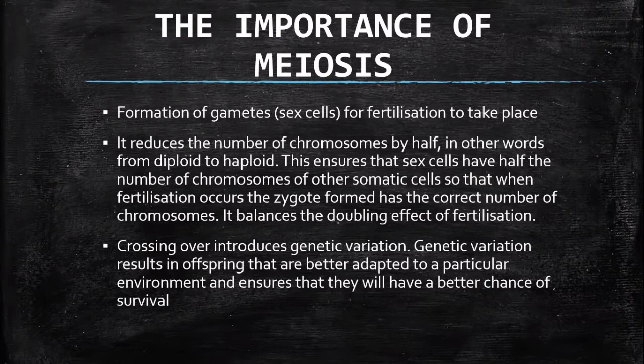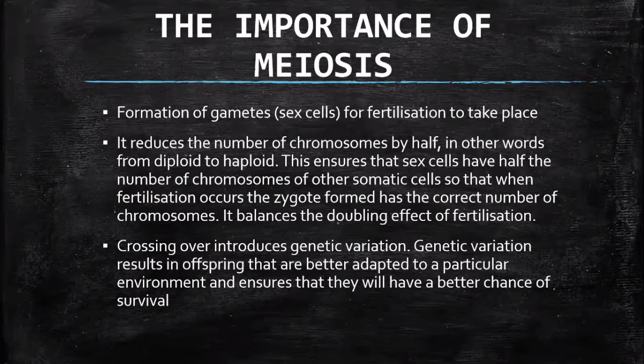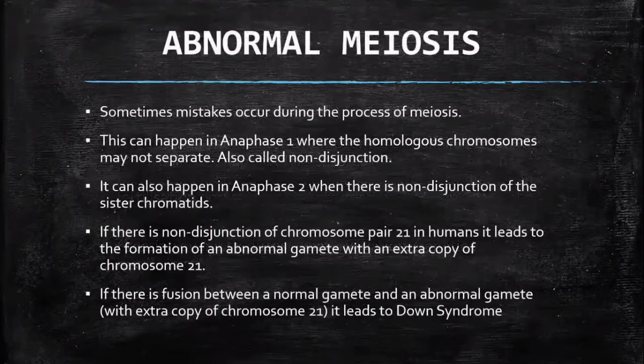There is also crossing over introduced during meiosis which introduces genetic variation. Genetic variation helps the offspring become better adapted to a particular environment so that it has a greater chance of survival, having particular traits that enable it to survive.